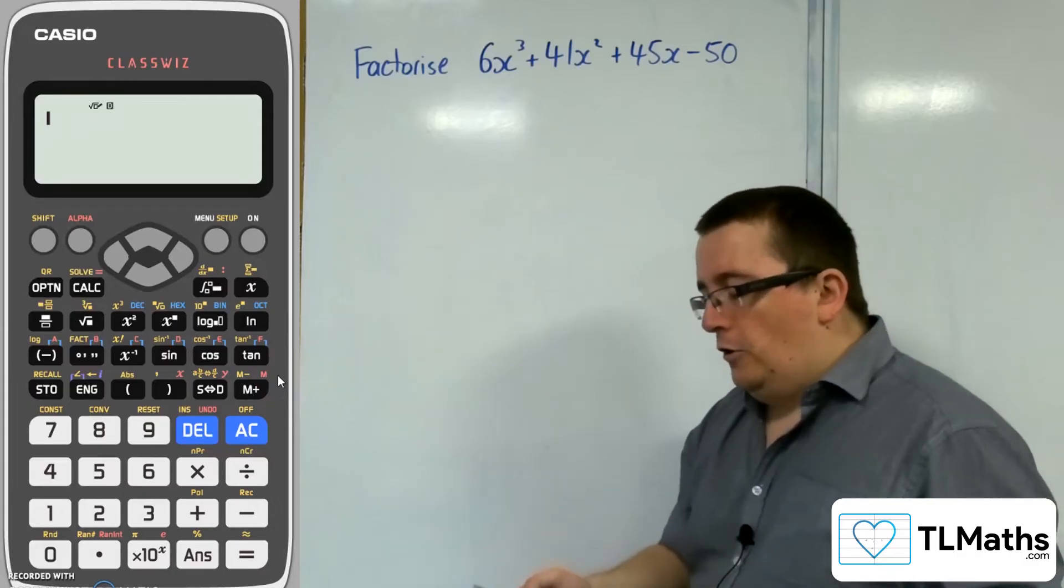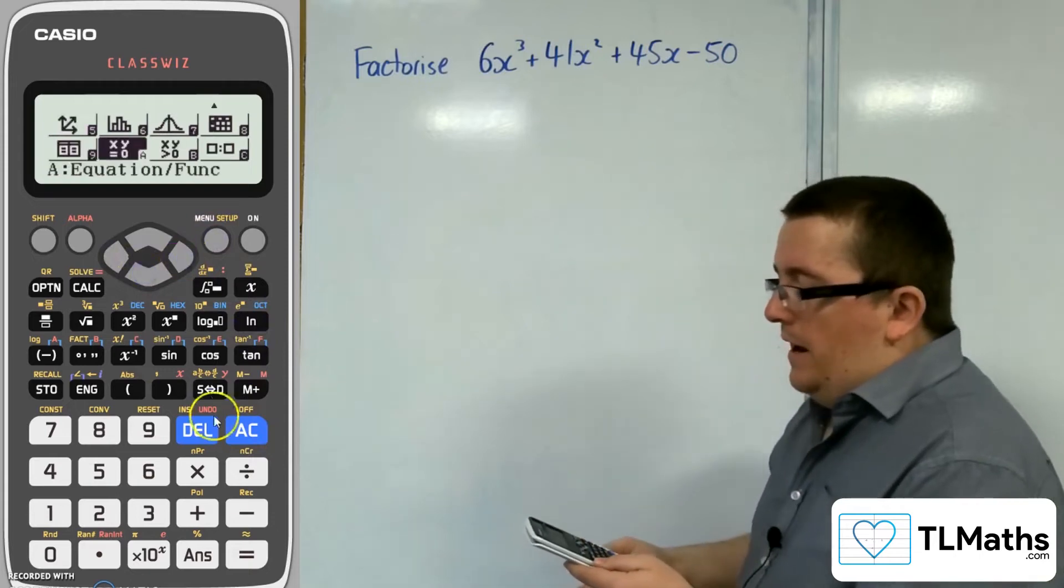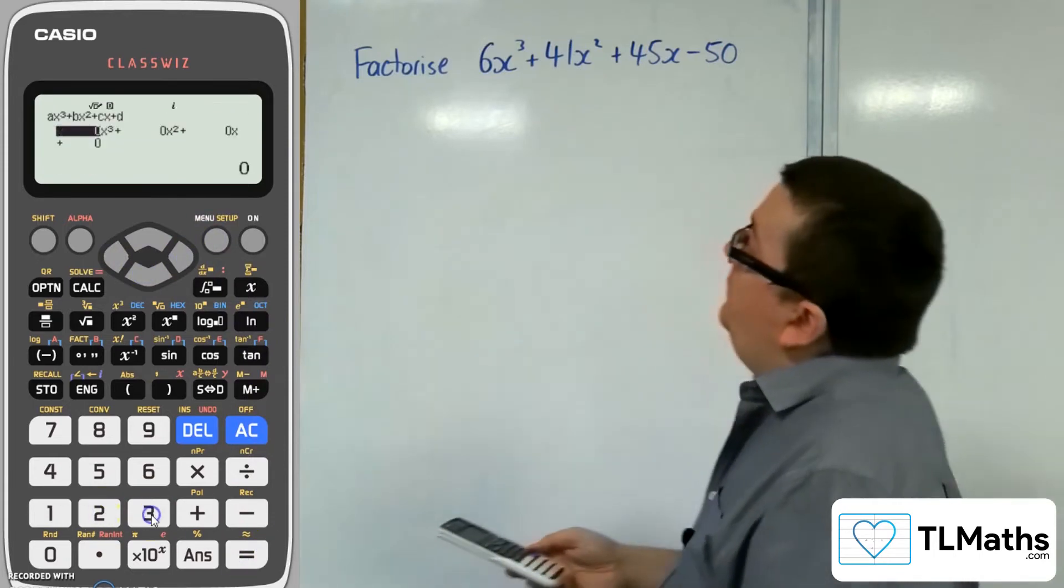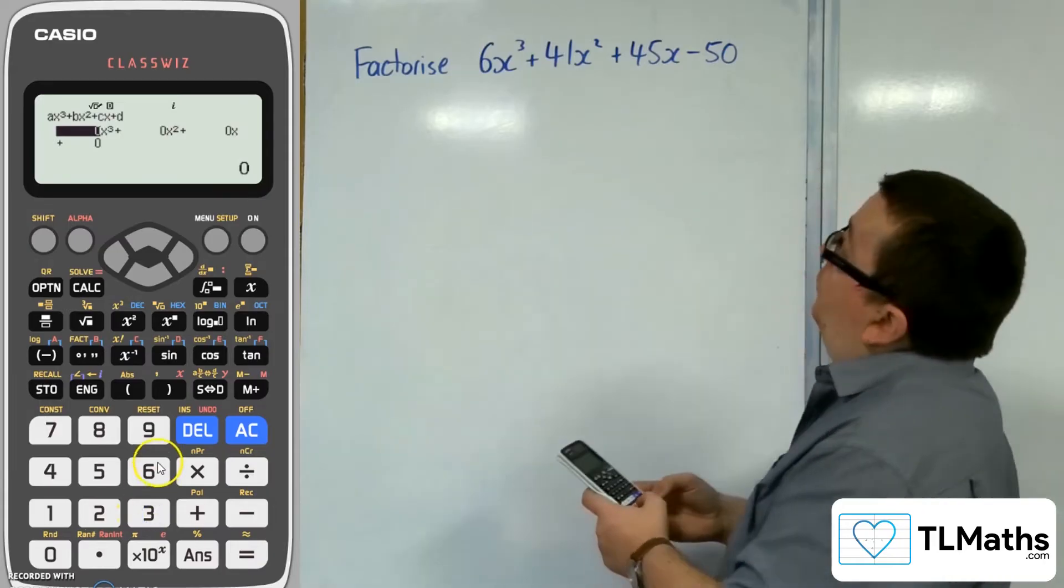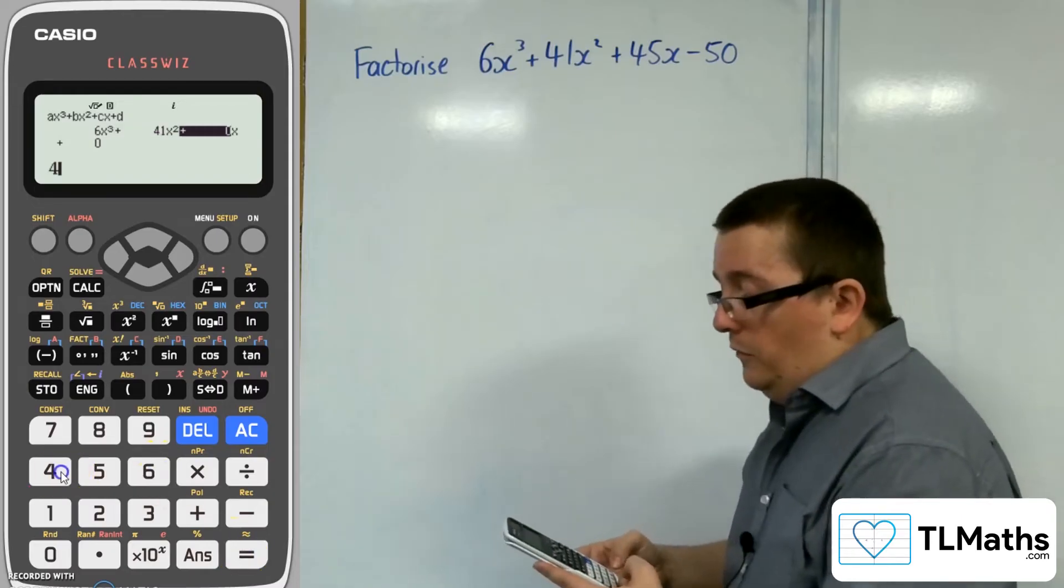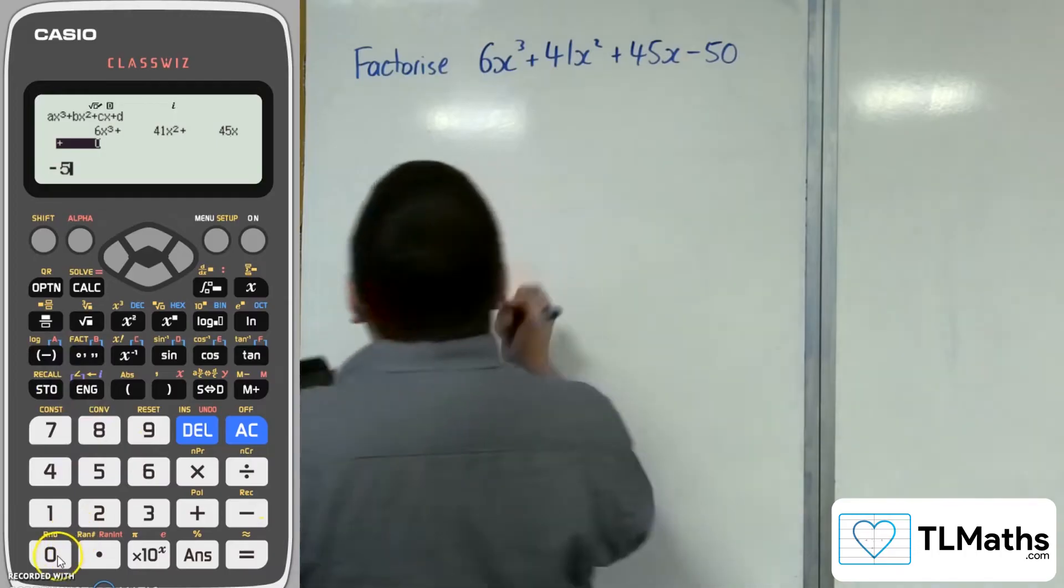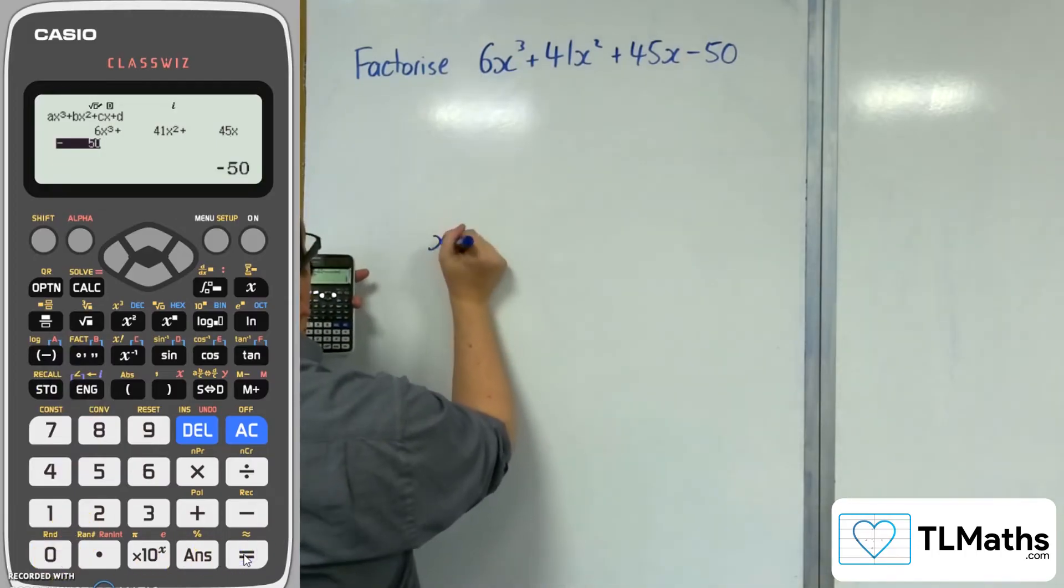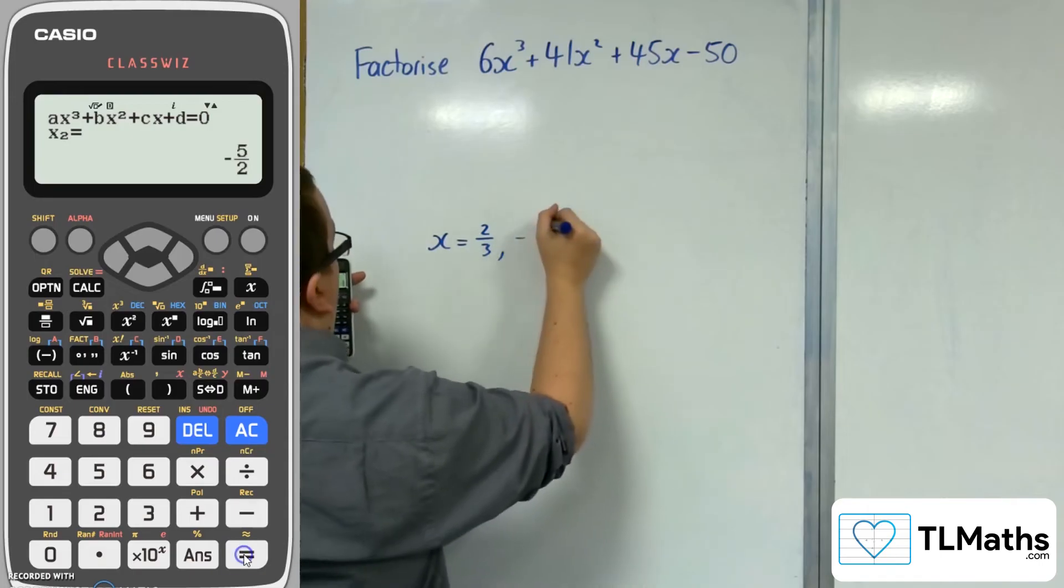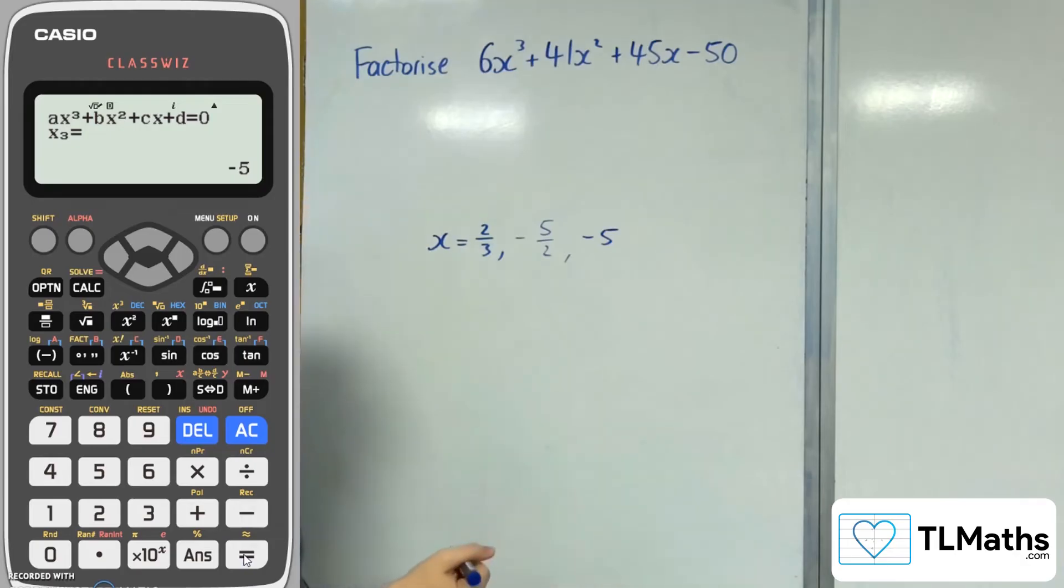I'm going to go to menu and then scroll down to A, and then polynomial, and then polynomial degree of 3. This is what I would use. I'm typing in 6, 41, 45, and -50. This is what I would use to solve the cubic. I press equals, and the first x value that I get is 2/3. Press equals again, and I'm getting -5/2. Press equals again, and I'm getting -5.